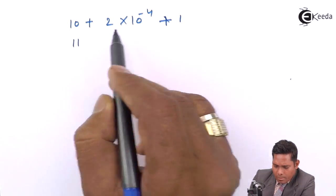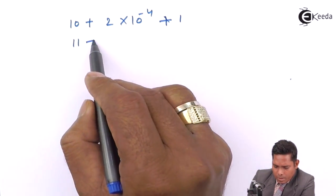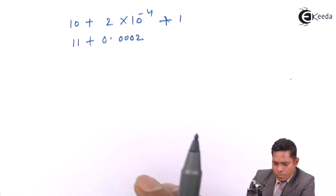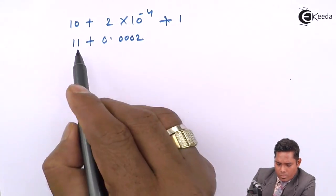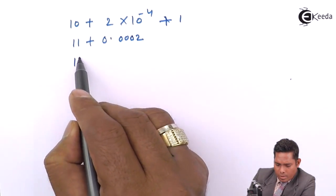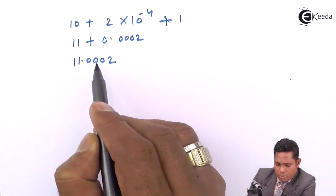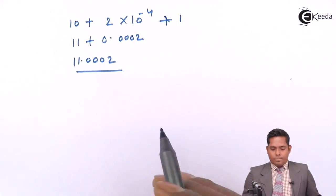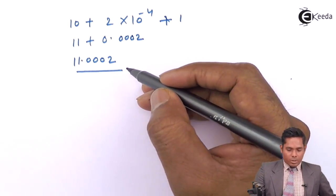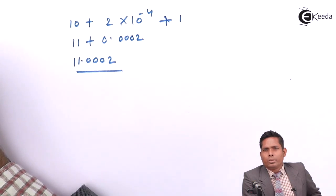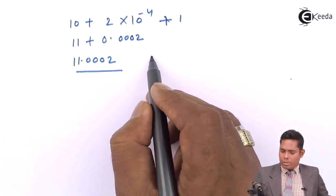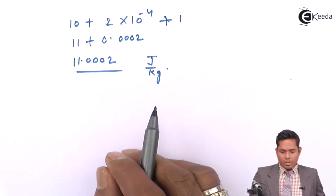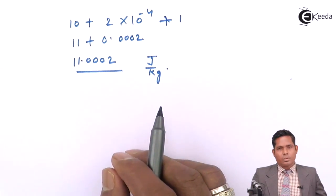Adding all terms: 10 plus 0.0002 plus 1 gives approximately 11.0002 joules per kilogram. Therefore, the total energy per unit mass is 11.0002 joules per kilogram.